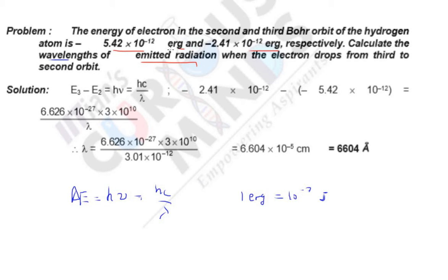Or else you can convert this into joules and keep this as minus 34 only. Now moving on. You can see that this is h into c, 3 × 10^10. This is actually centimeter per second, not meter per second. So on solving, you get the value of λ as 6604 angstrom.